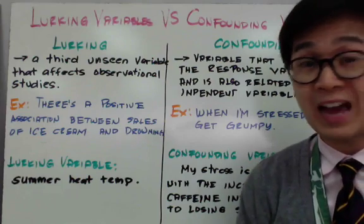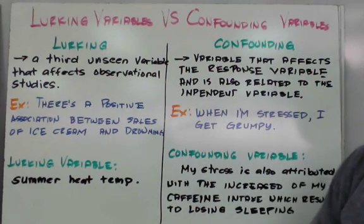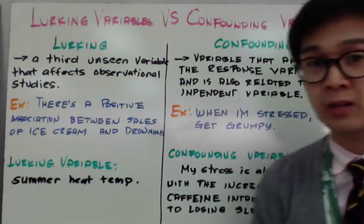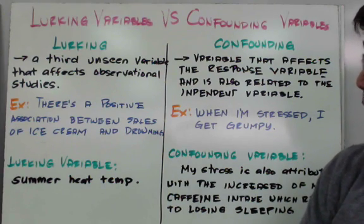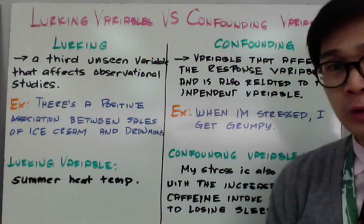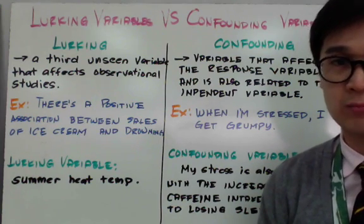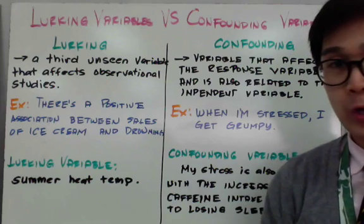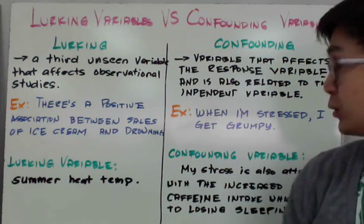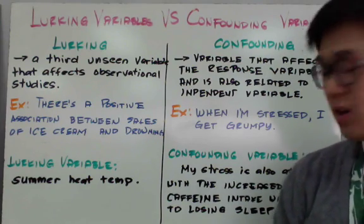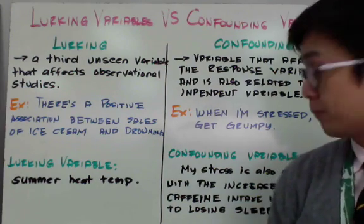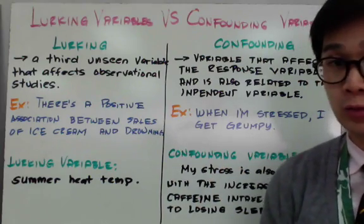A confounding variable is a variable that affects the response variable and is also related to the independent variable. For example, when I'm stressed, I get grumpy — but what we don't know is that when I'm stressed, I drink more coffee, which causes me to lose sleep. So we're not really sure what causes my grumpiness: is it the stress itself, or the caffeine intake and lack of sleep that result from my coping mechanism?